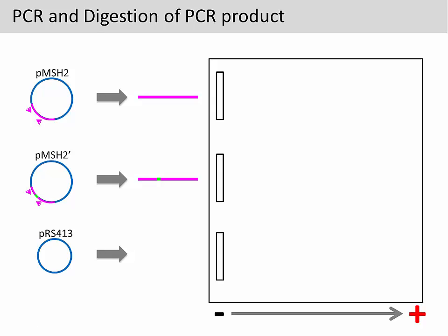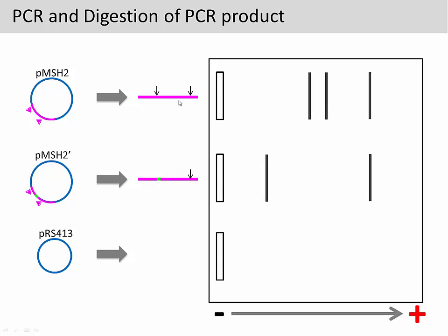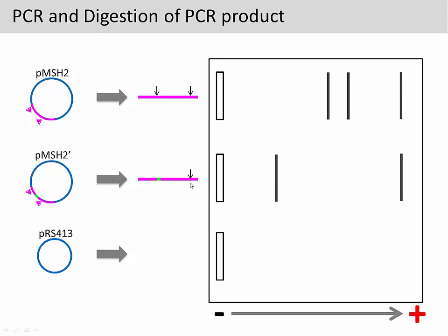You can use a restriction enzyme to distinguish these two PCR products because the mutation will either abolish or create a new cutting site for a restriction enzyme. In this case, the enzyme cuts the original wild type product twice, while one of the cutting sites is abolished by the presence of the mutation. Therefore, after digestion, three fragments are generated from the wild type product, while two fragments are generated from the mutant allele.